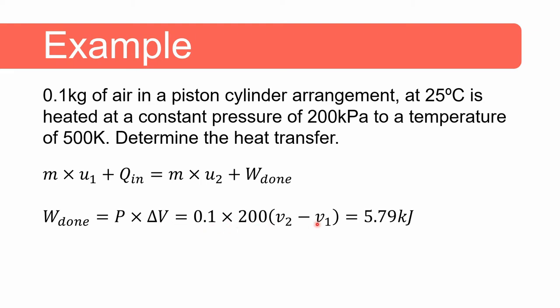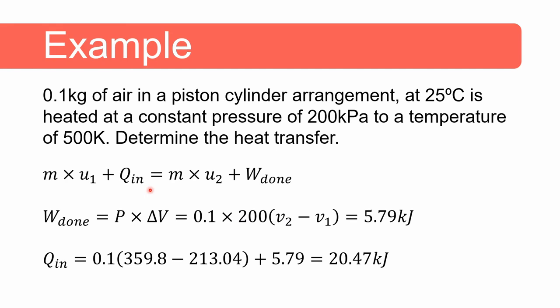Substituting all the values, the only two unknowns are the volume at state two and state one, which we can determine using the ideal gas law. This gives us a work done of 5.79 kilojoules. Now that we know the work done, we can solve for the only remaining unknown — the heat transfer — and we get an answer of 20.47 kilojoules.